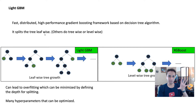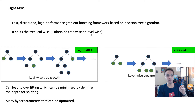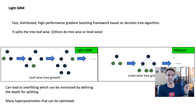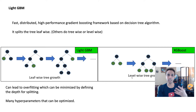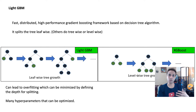LightGBM splits the tree leaf-wise. There are many ways to split trees, and this is how LightGBM does it, while others do tree-wise or level-wise splitting. Here's a quick example of the difference: leaf-wise tree growth splits based on the leaves, whereas XGBoost and random forest do level-wise or tree-wise splitting. If you want to understand this more, refer to the documentation.